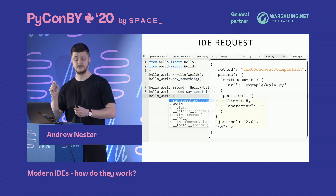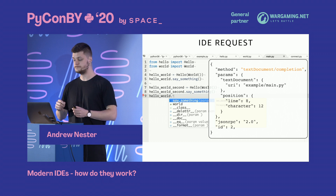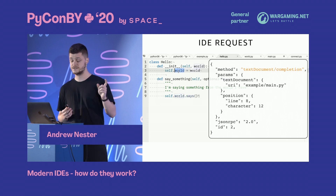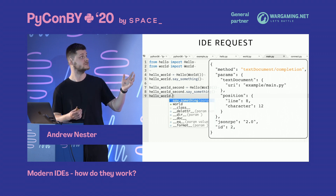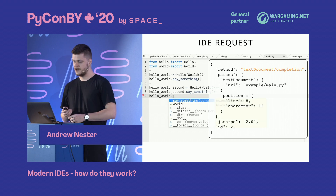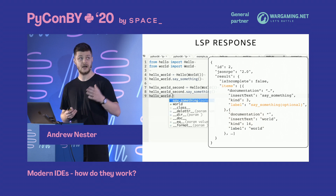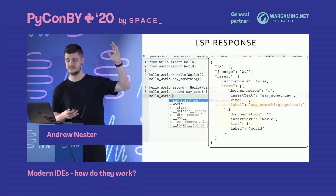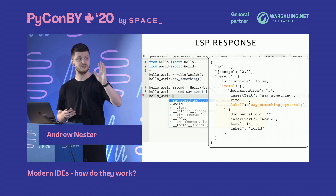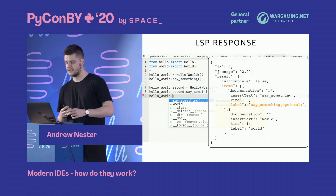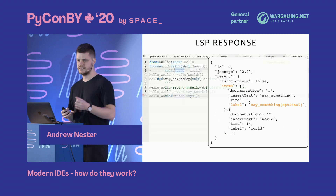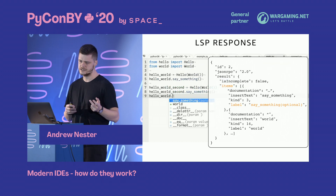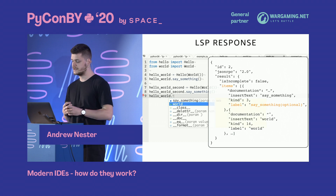When a developer types a dot, the IDE sends a request for code completion. As mentioned, the only information needed is the text document path — which file triggered it — and the position: line and character. The server sends back the completion items, which can be a huge list. Each item contains documentation, a label, the kind of completion, and so on.